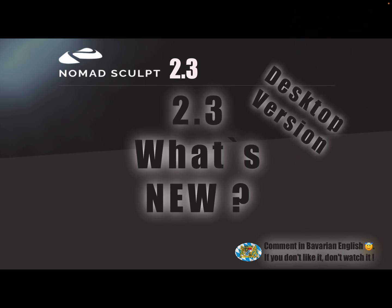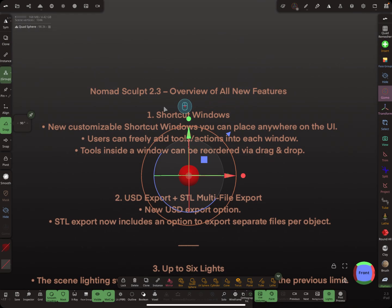Hello, NomadSculpt has a new version update — version 2.3 — and this video is a what's new overview of the new things. First of all, there's now a desktop version of NomadSculpt for Mac and Windows PCs. Now let's look at NomadSculpt — I have a list here with an overview of all the new features.